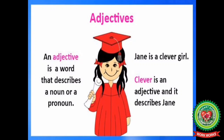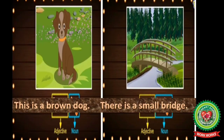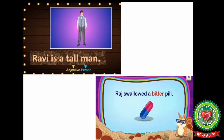An adjective is a word that describes a noun or a pronoun. For example, Jane is a clever girl — 'clever' is an adjective and it describes Jane. More examples: this is a brown dog — 'brown' describes the noun 'dog', so 'brown' is an adjective. There is a small bridge — 'small' describes 'bridge'. Ravi is a tall man — 'tall' describes 'man'. Raj swallowed a bitter pill — 'bitter' describes 'pill', so 'bitter' is an adjective.